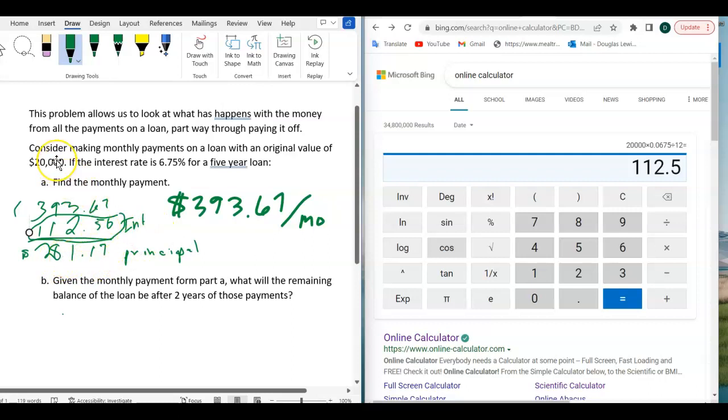And that means the remaining amount would be the $281.17. That reduces the $20,000 loan. So the next month, you'll owe a little bit less. You'll owe $19,719 or something like that. And so your interest will be a little less.